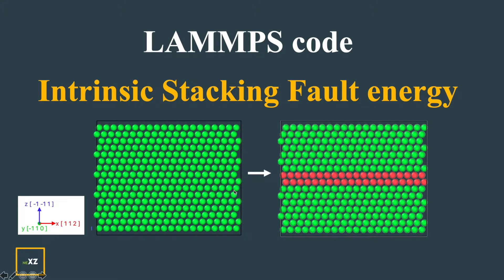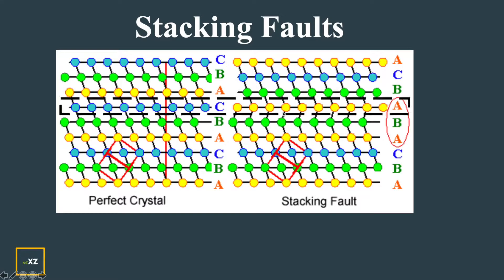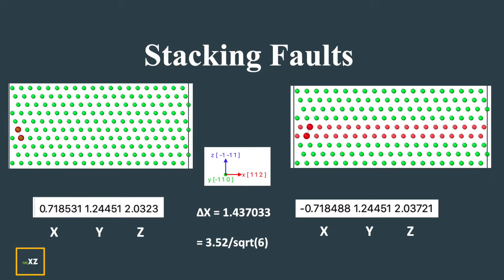Here is a perfect crystal and here is a stacking fault created by displacing one plane of atoms. This is the orientation of the crystal lattice. If you take a perfect crystal you have ABC ABC stacking, and for the stacking fault you see ABC AB — this plane has changed from C to A position, so that is the stacking fault.